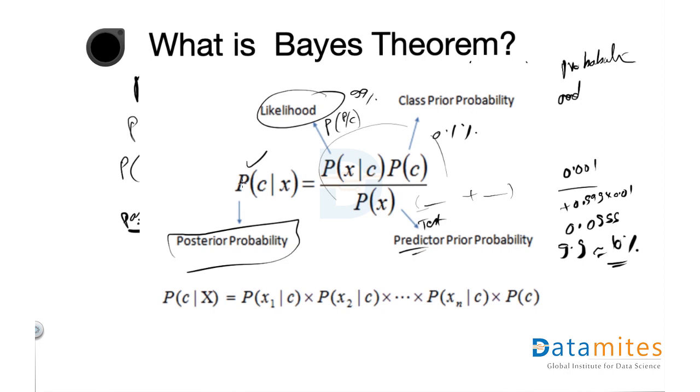If you combine all these things, you will get what we call posterior probability, which is what we are interested in, which is actually the probability of Bob having cancer given that the test gives you a positive result. That's it. Hope this explains what is Bayes theorem. I'll see you in the next video. Thank you.